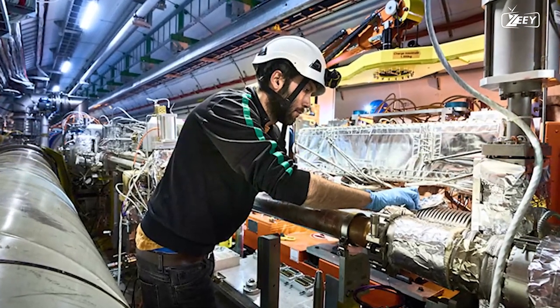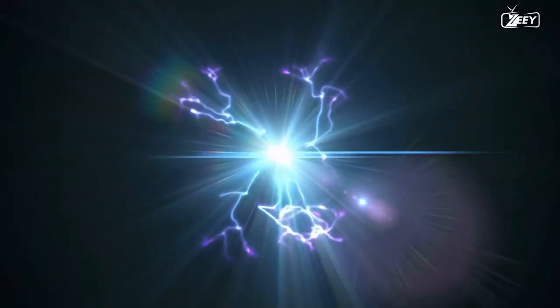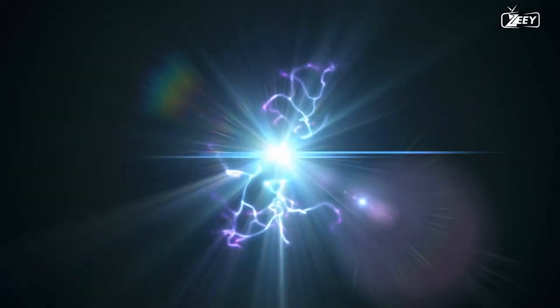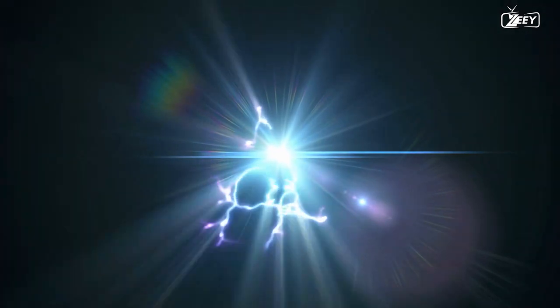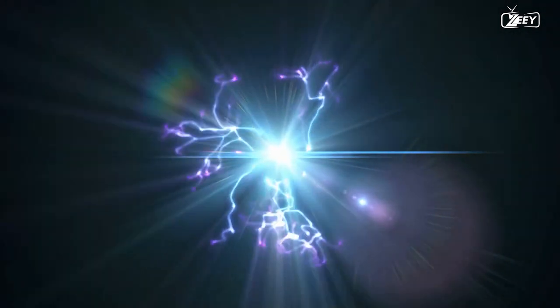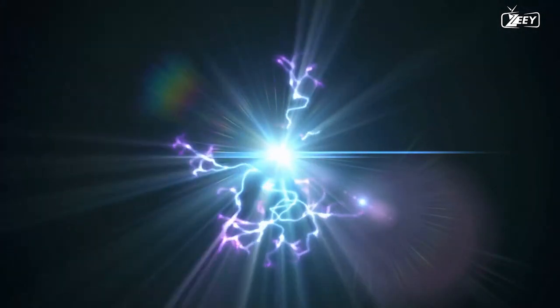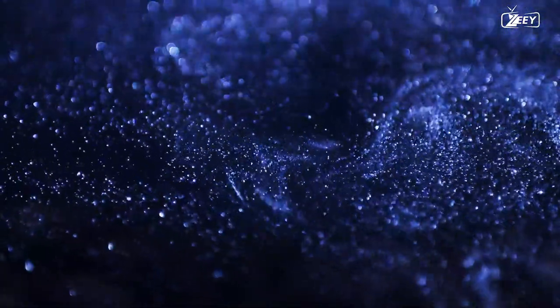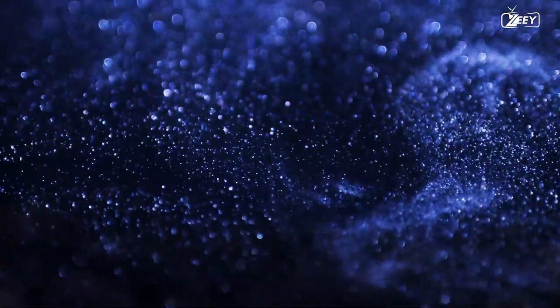Magnetic fields are used to accomplish this. Magnetic fields, unlike electric fields, do not accelerate charged particles, rather, they deflect them, causing them to shift direction. Strong magnets are utilized to deflect protons and keep them moving along the LHC's circular ring.